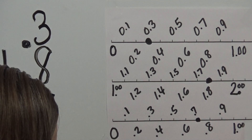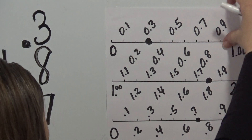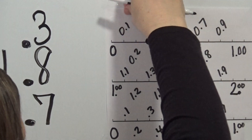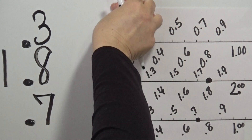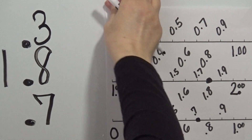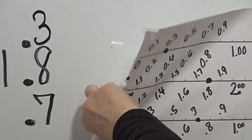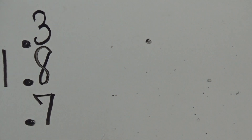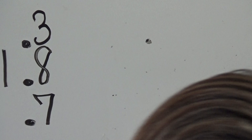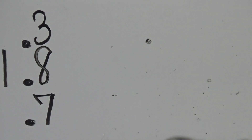Now I'm going to take this away because we just did the decimals for tenths on the number line. We're going to go ahead and do the next one, which is the hundredths — which is pennies.